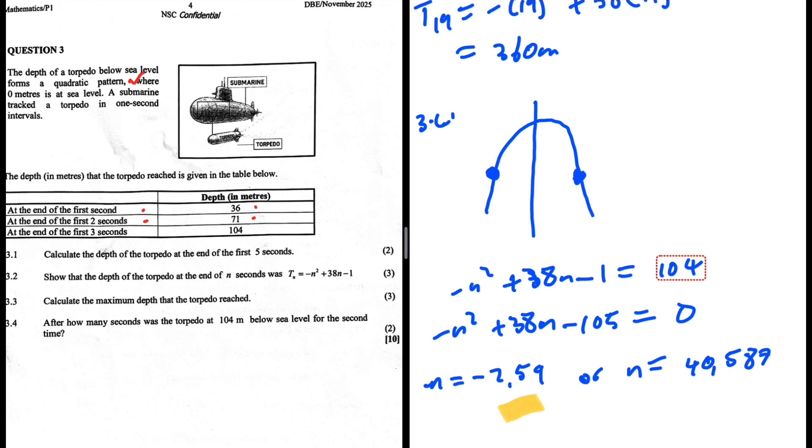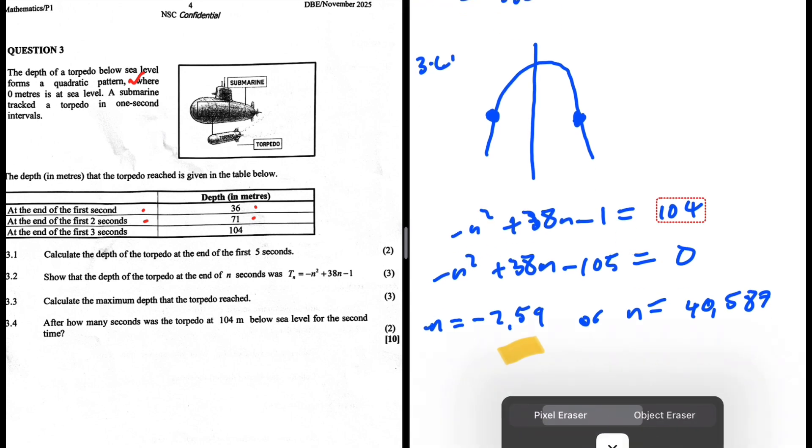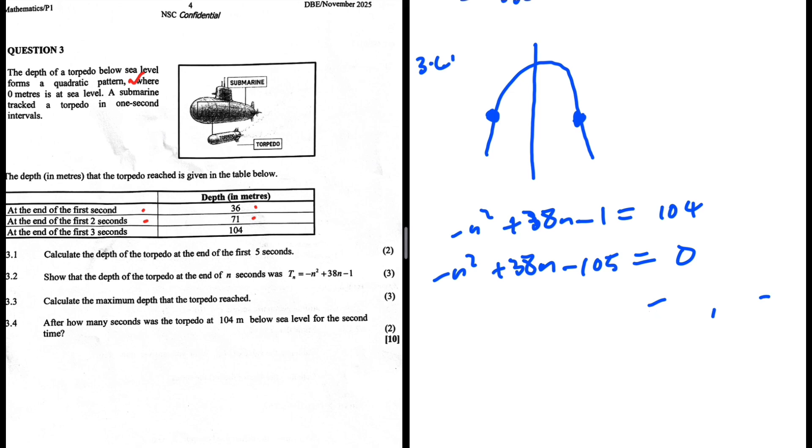Let me substitute in my calculator once more. So 38, minus b, 38 plus b squared, so 38 squared minus 4 times a which is minus 1 times c which is minus 105, divided by 2 times minus 1. I think I made a mistake when I substituted in my calculator.